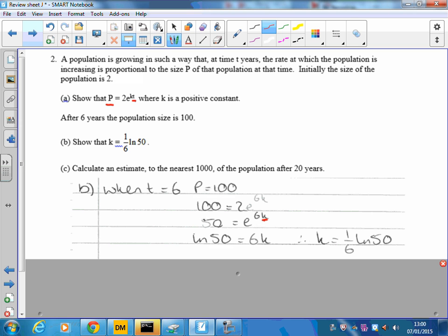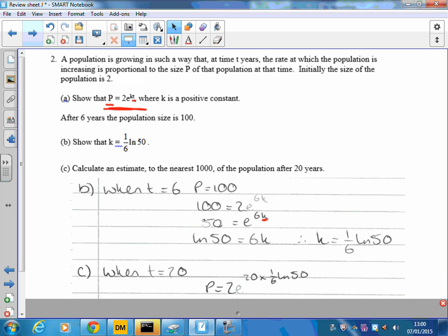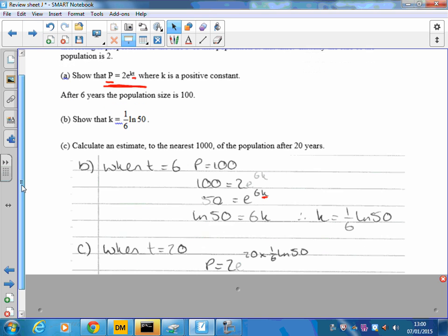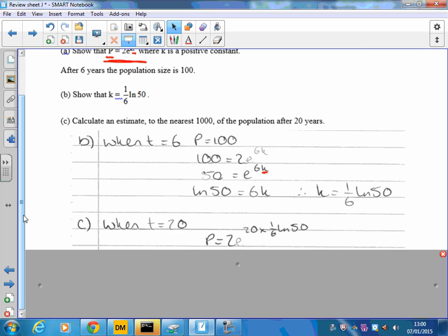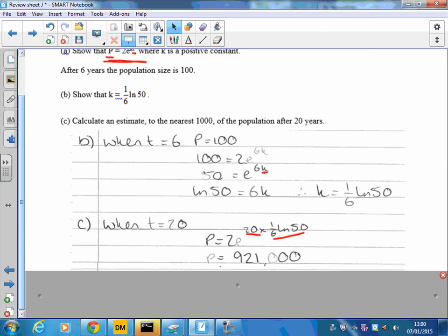And last of all, part c, we want to know the population after 20 years. So let's go back to our equation. We now know what k is as well, and we write it with all the information we know. Now we've got that t is 20. So substituting that all in, we've worked out that P equals 2e to the k, which was a sixth of ln 50 times t, which is 20. And that's just a calculator job. And to the nearest 1,000, it's 921,000. So that's question 2 done.